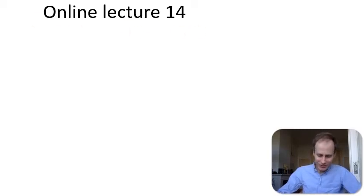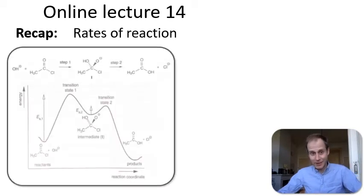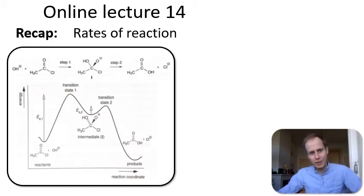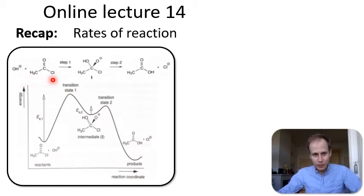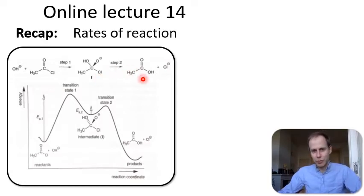Welcome to online lecture number 14. Last week we spoke a lot about rates of reaction and towards the end of the week we learned that many reactions proceed stepwise. For instance, this nucleophilic attack on acyl chloride produces in the first step a reactive intermediate, and this reactive intermediate then via a second step produces the products.